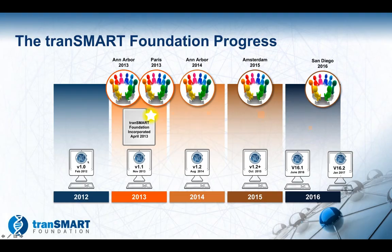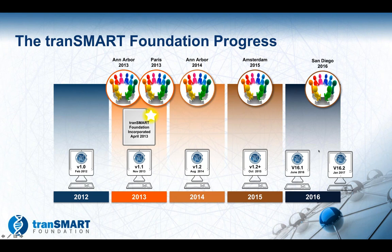When TransMart was released to open source, it sat there for a year and there was a sense that it needed a little bit more development. So a year later in 2013, the TransMart Foundation was established. Meetings were held in Ann Arbor and Paris, and each year since then we've been holding a TransMart Foundation meeting. The community stepped up and in a number of interesting releases the platform has been developing on its own path, although unfortunately there was some divergence from I2B2, making tightly integrated systems much more challenging as we moved forward.